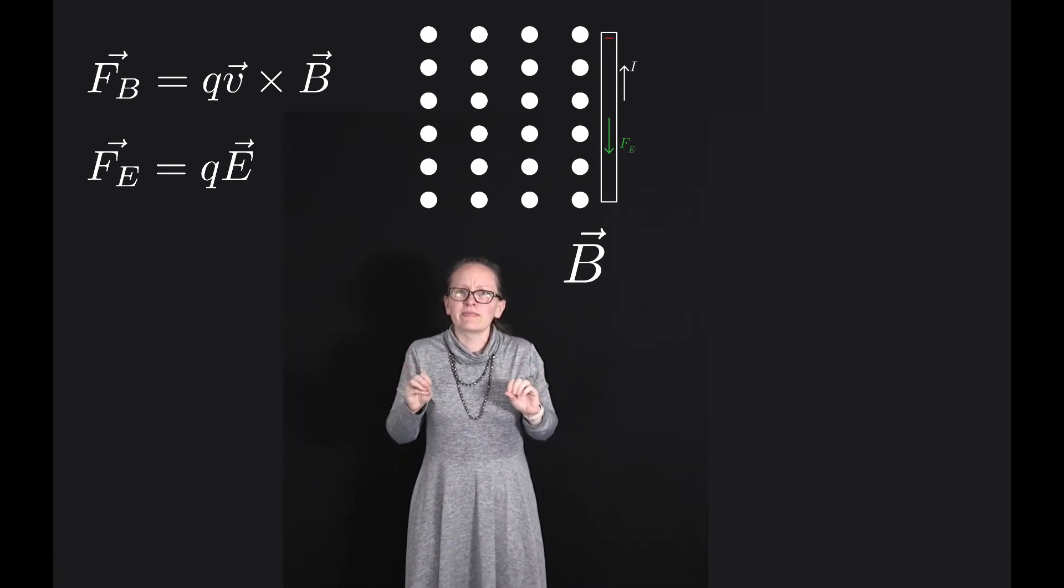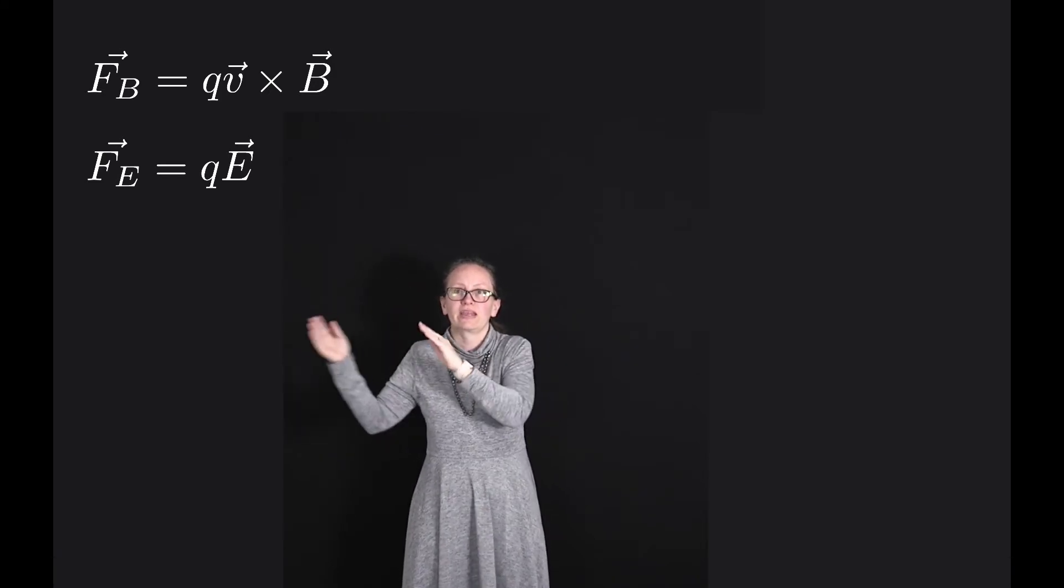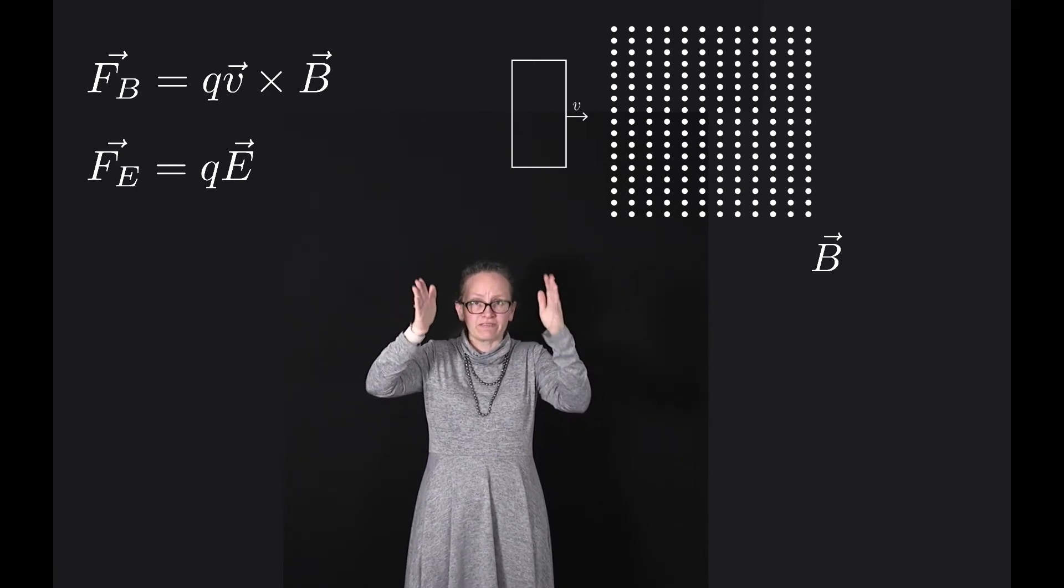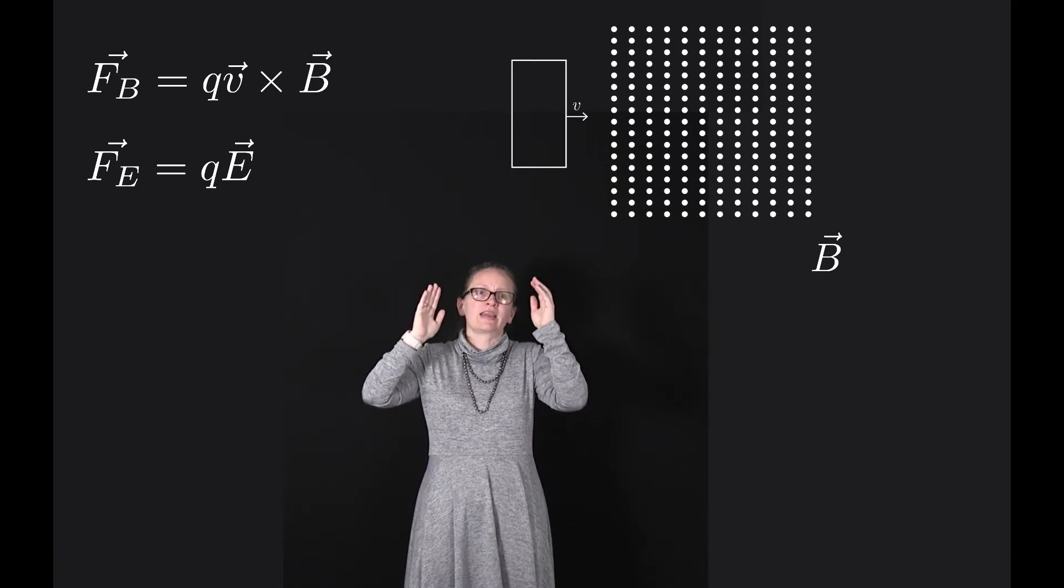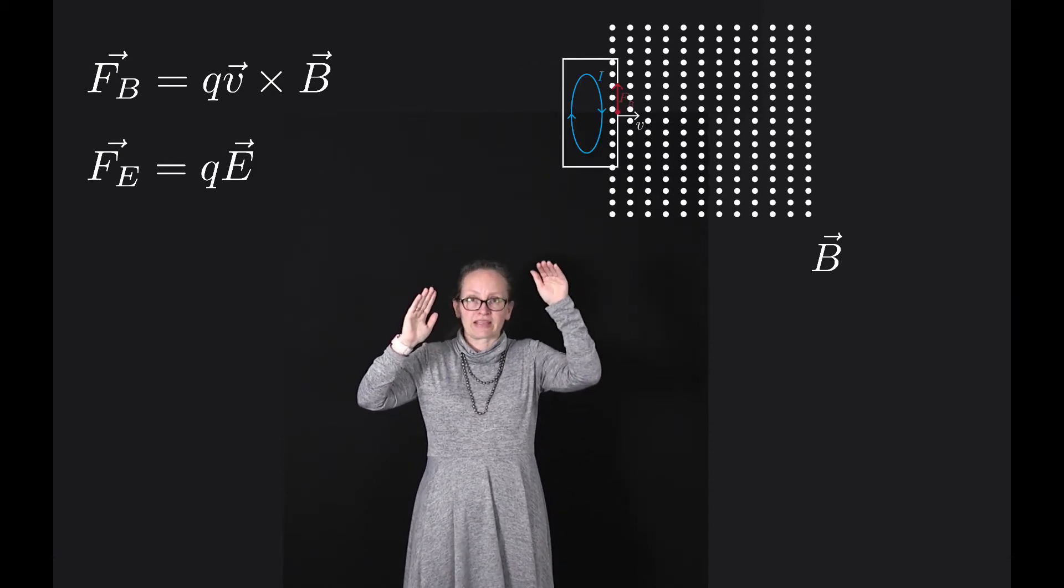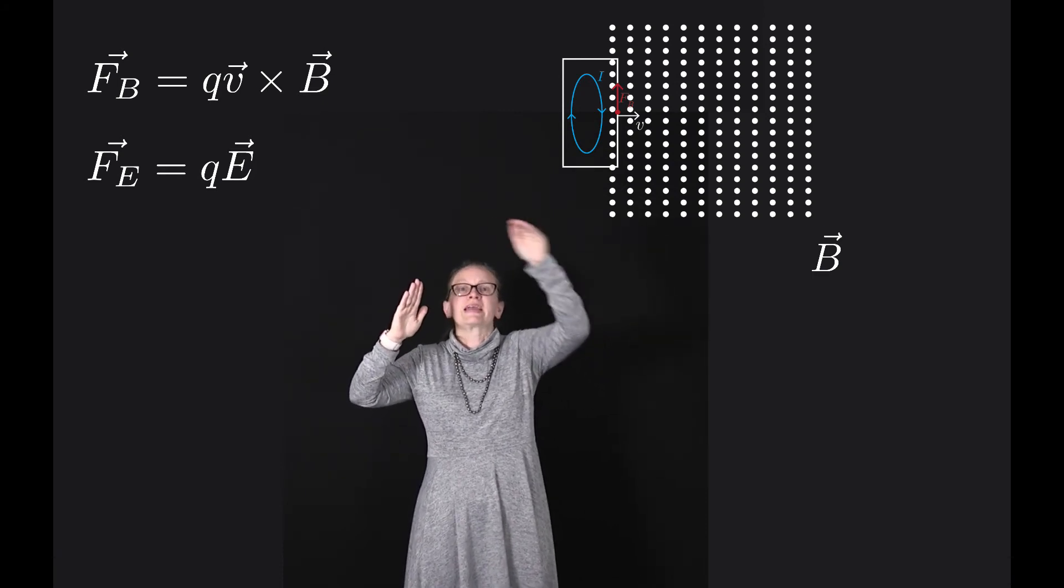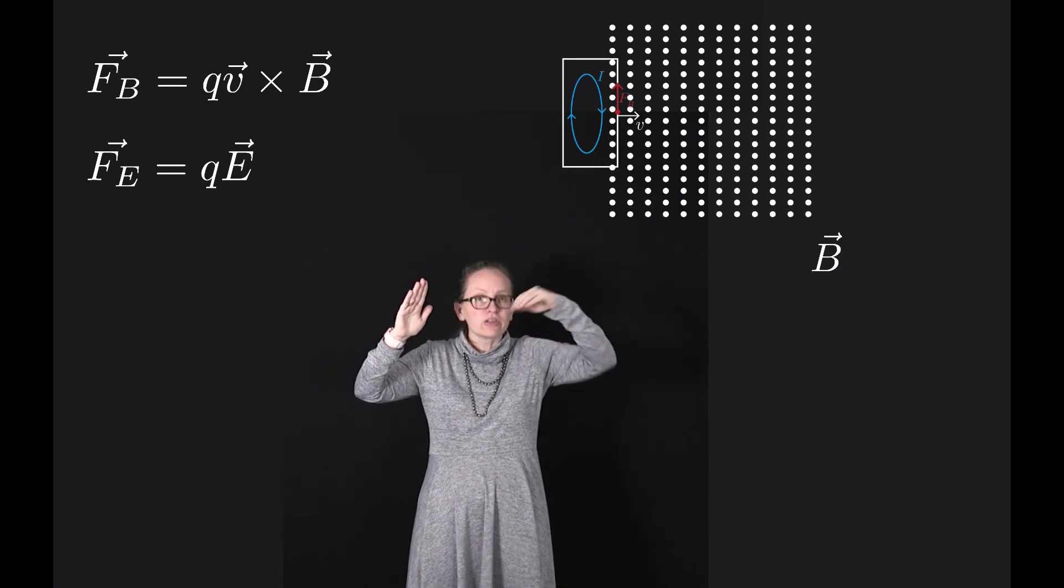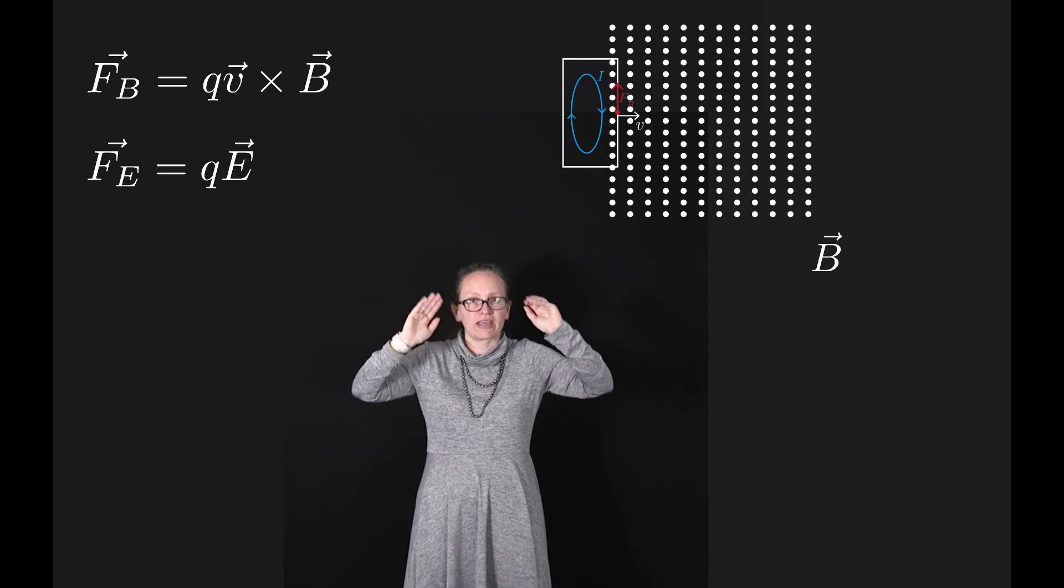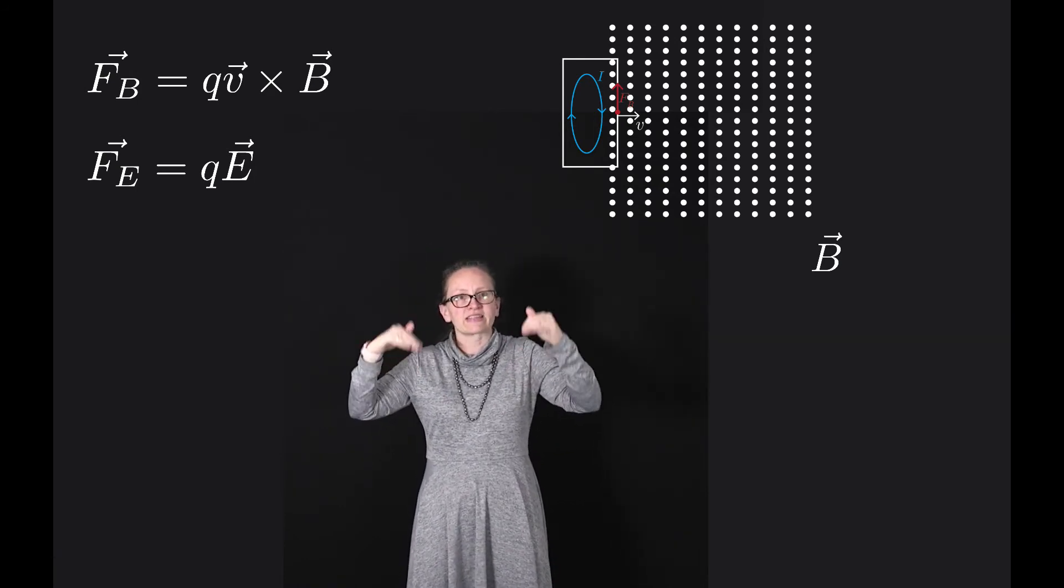So let's now imagine what would happen if instead of moving just a single wire into this magnetic field, we instead move the loop. Well as we move that loop into the magnetic field, the electrons in the right-hand side of the loop are going to initially feel that magnetic force and so they will move upwards. However, now because it's a loop they can actually get out of the way. So they can actually keep flowing in this case because we're not establishing an electric field to counteract that magnetic field.